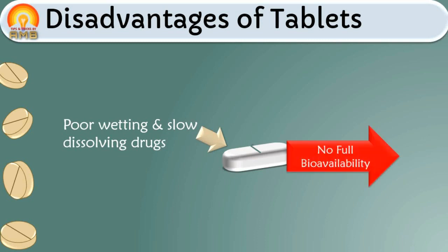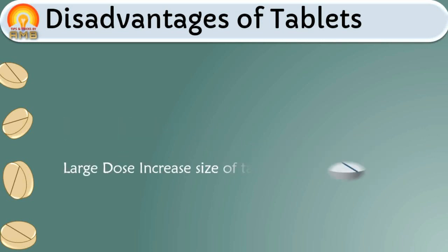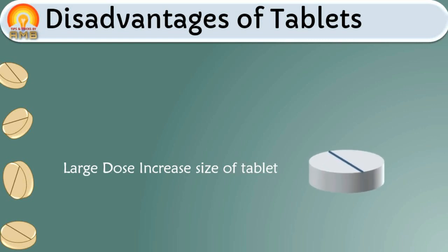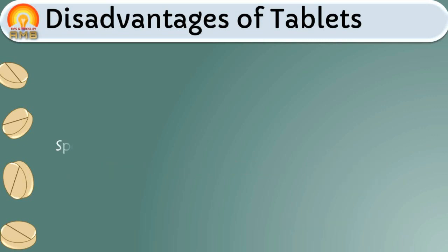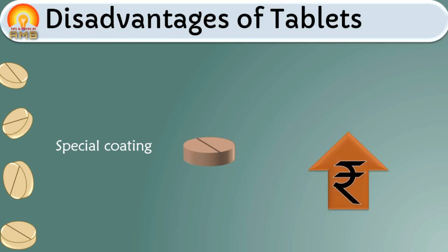Drugs with poor wetting or slow dissolution properties will not give full bioavailability from tablets, so these substances are developed into other dosage forms. If a drug has a large dose, the size of the tablet may become very large and difficult to administer. Special processing or coating is required if a drug is bitter, has an objectionable odor, or is sensitive to moisture or oxygen, which may increase the cost of the tablet.